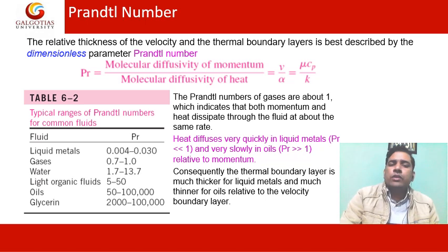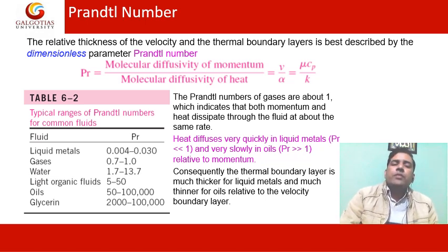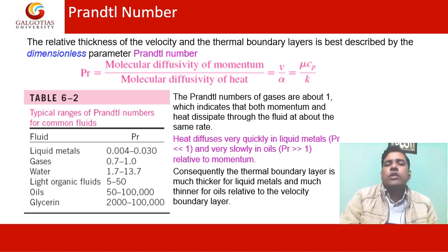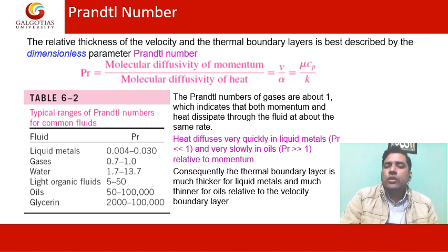The dimensionless number which combines the velocity and thermal boundary layers, giving insight into both, is known as the Prandtl number. With the help of the Prandtl number we can calculate the relative thickness of these two boundary layers. The Prandtl number is given by the molecular diffusivity of momentum upon molecular diffusivity of heat, that is kinematic viscosity nu upon thermal diffusivity alpha, and the overall relationship comes out to be mu times Cp upon K.